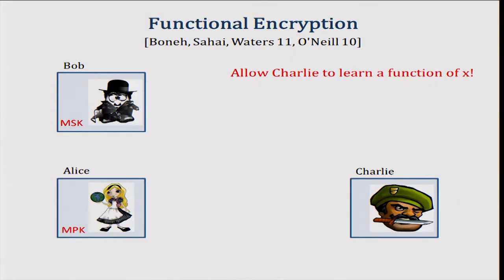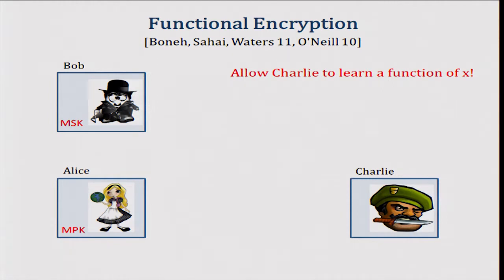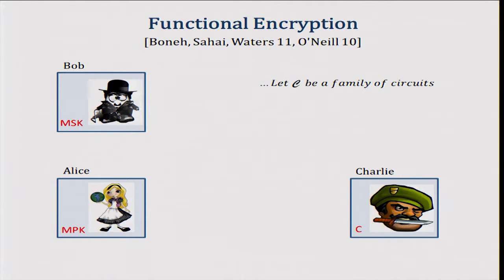To overcome these obstacles, the notion of functional encryption has been proposed by Boneh-Sahai-Waters and by Adam O'Neill, and it modifies the classical public key encryption system as follows. Now Bob has a master secret key, and Alice has a master public key. We have a particular circuit family C in mind, and we have a circuit C which is associated with the user Charlie.